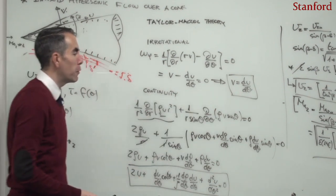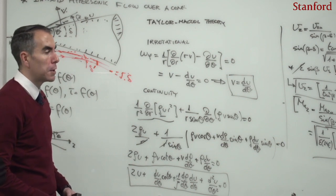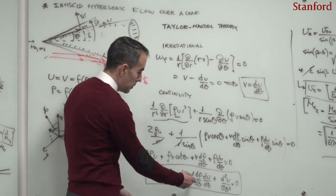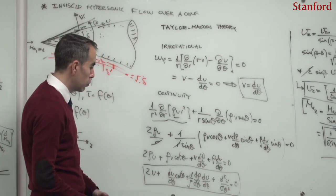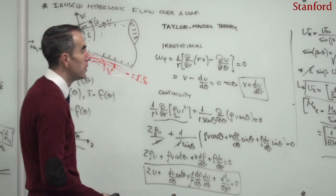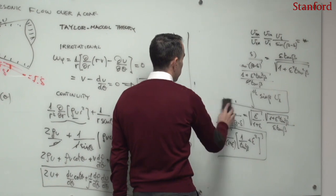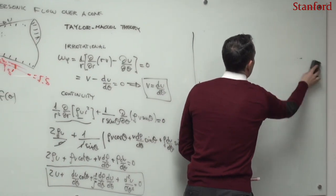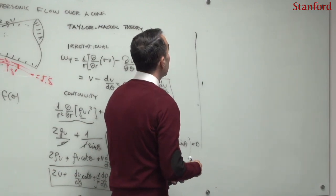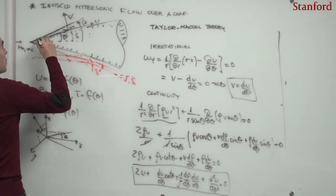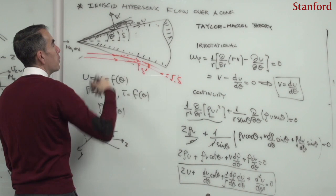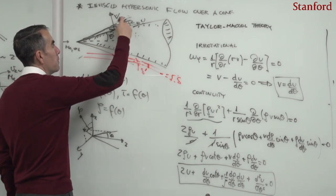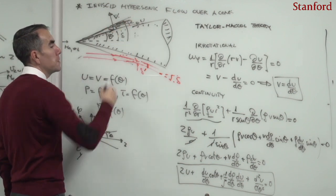The problem is that this equation contains a density variation. To obtain an expression for the density, one applies an additional constraint: since the shock is straight, all streamlines downstream traverse the shock at the same conditions, so the entropy of each streamline is the same and the entropy in the post-shock gas is uniform.